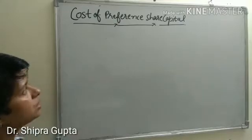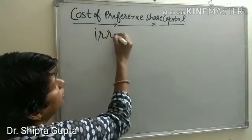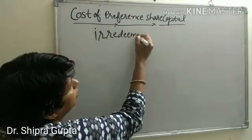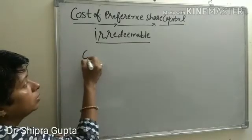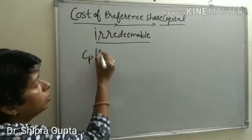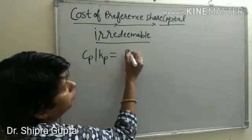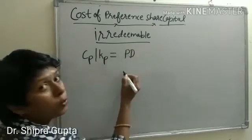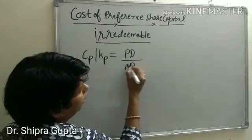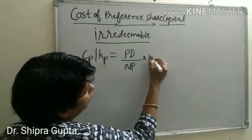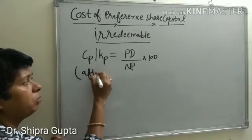First, we will study the case of irredeemable. The notation is Cp or Kp. Cost of preference share capital equals Pd — that is, preference dividend — upon Np, multiplied by 100.